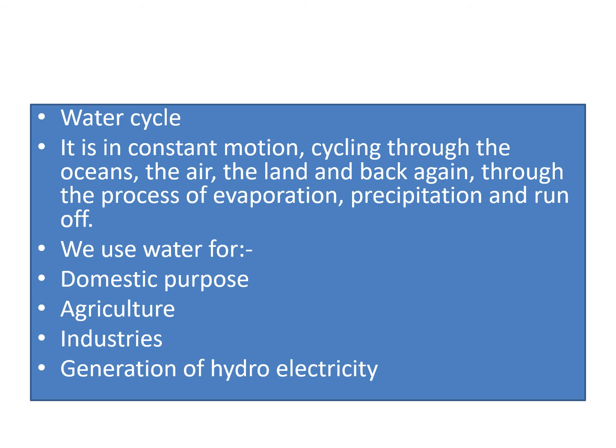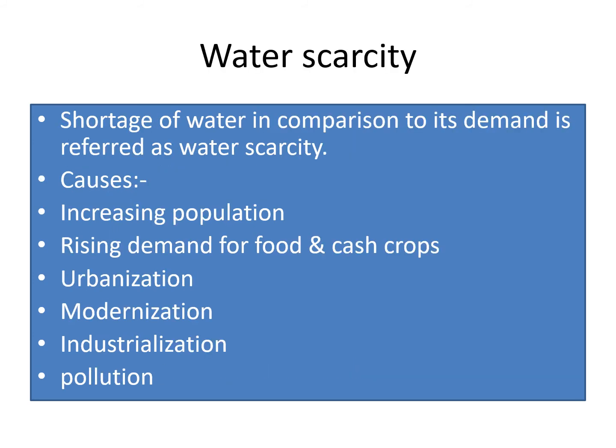We use water for domestic purposes like drinking, bathing, washing and cleaning. For agriculture: maximum part of water is used for irrigation. India is an agricultural country and the second most populous country of the world, so to grow more crops we need timely water provided through irrigation. For industries: industries make use of water for cooling, washing and mixing. By constructing dams across rivers, we generate hydroelectricity, which is a clean source of energy.